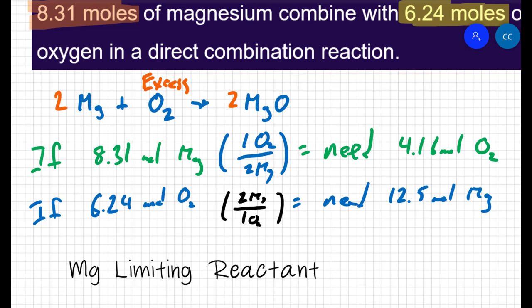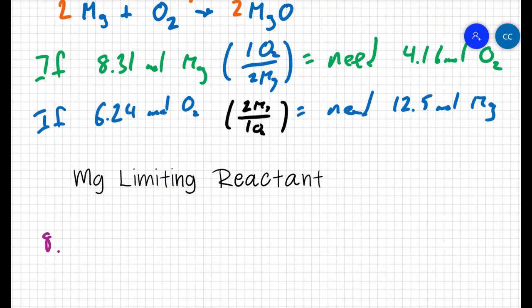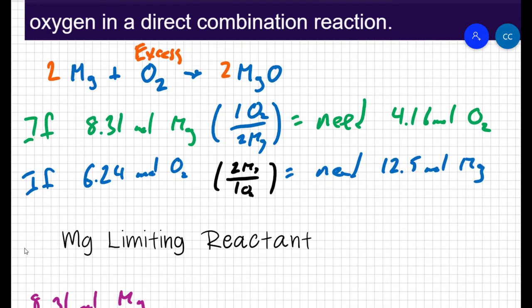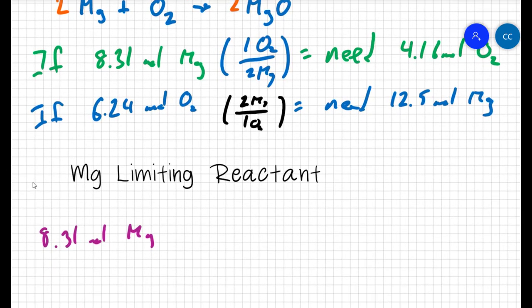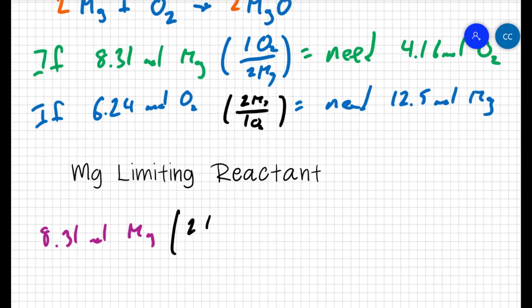So if I know that magnesium is my limiting reactant, I can figure out how much magnesium oxide I will actually make. I'm given 8.31 moles of magnesium. And if I look at the balanced reaction, the magnesium and the magnesium oxide are in a two to two or in a one to one ratio. There are two magnesium oxides for every two magnesiums.